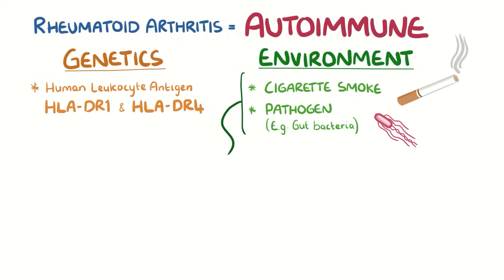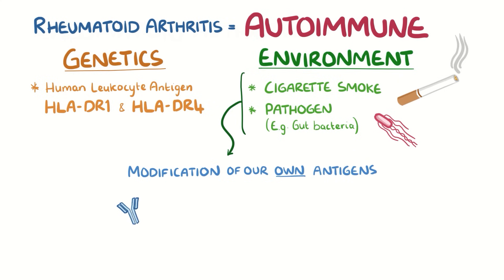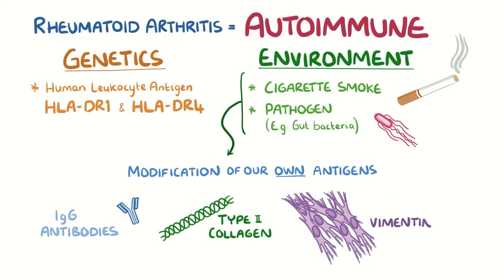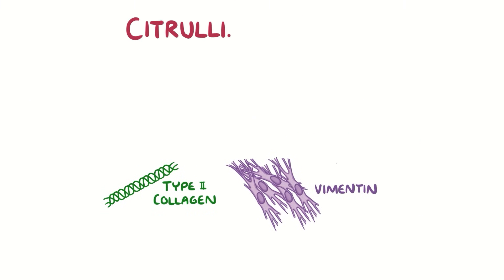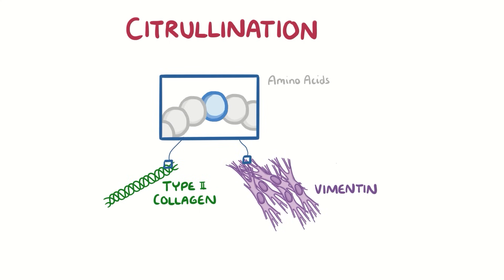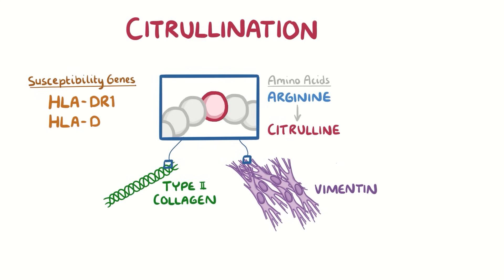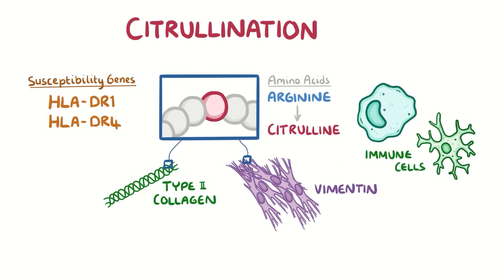These environmental factors can cause modification of our own antigens, such as IgG antibodies or other proteins like type 2 collagen or vimentin. Type 2 collagen and vimentin can get modified through a process called citrullination — that's when the amino acid arginine found in these proteins is converted into another amino acid, citrulline. Meanwhile, due to the susceptibility genes HLA-DR1 and HLA-DR4, immune cells get confused by these changes and no longer recognise these proteins as self-antigens.